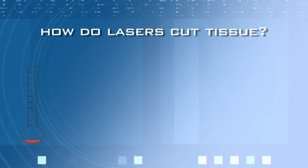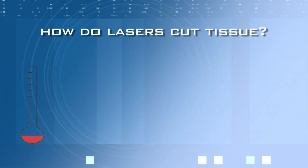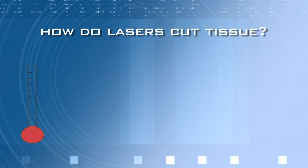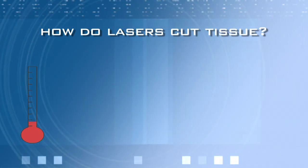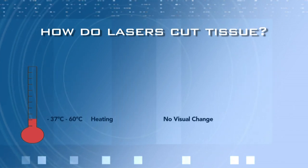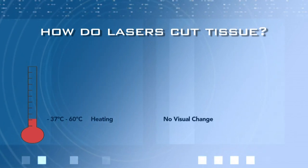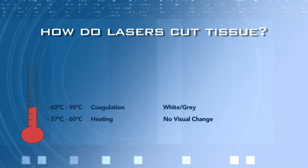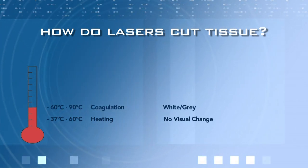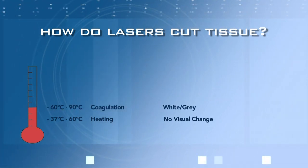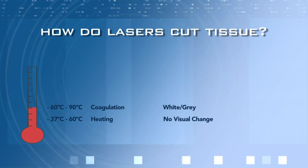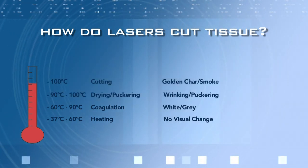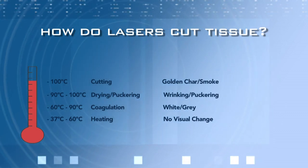As you begin to deposit energy into tissue, it translates into heat. Heat affects the tissue and, depending on the amount of energy deposited, changes begin to occur. Between 37 and 60 degrees Celsius, no permanent changes will occur to the tissue. However, between 60 and 90 degrees Celsius, structural and functional changes will occur resulting in protein denaturation, and tissue will appear gray or white. At 100 degrees, full vaporization and cutting occurs and resembles a golden char.